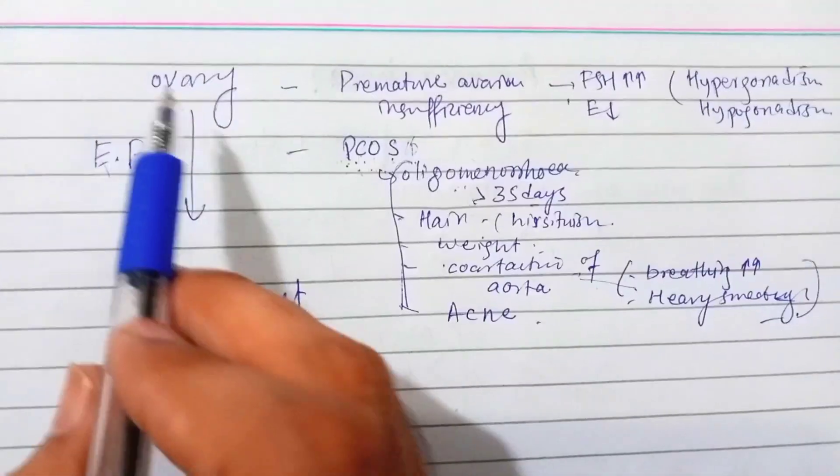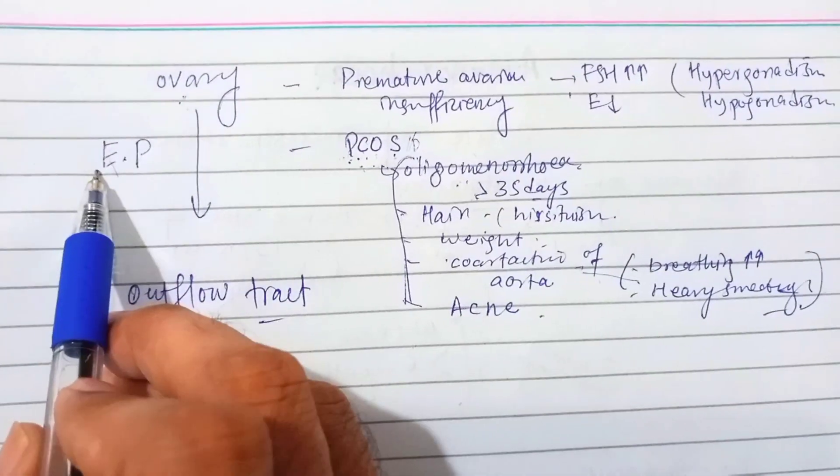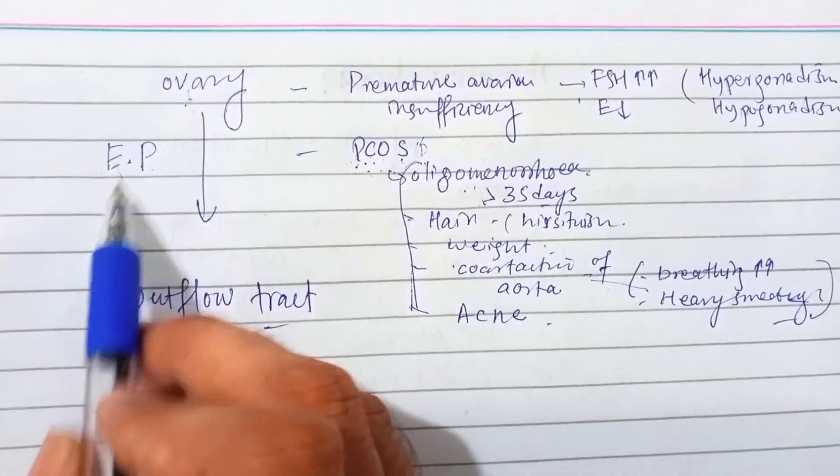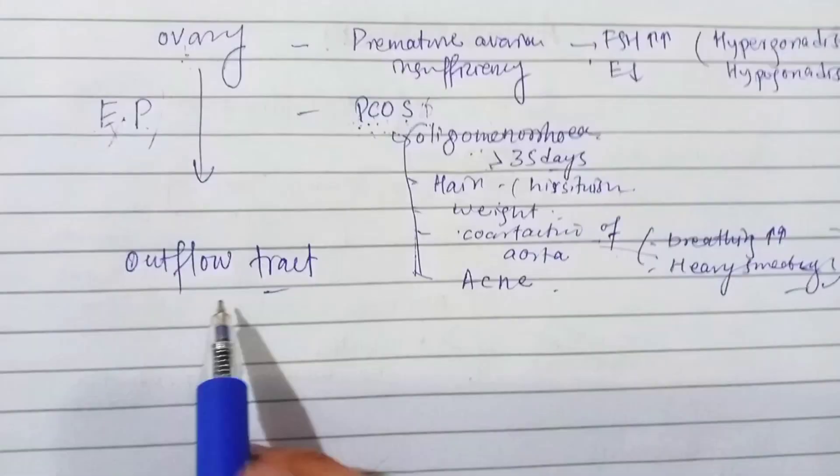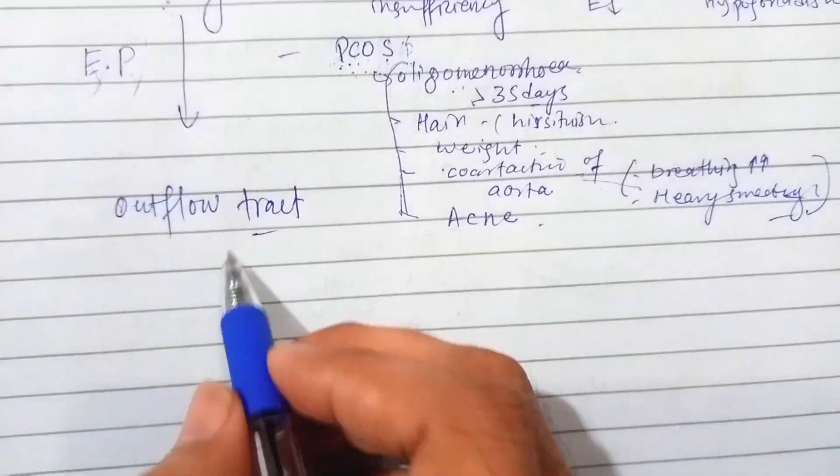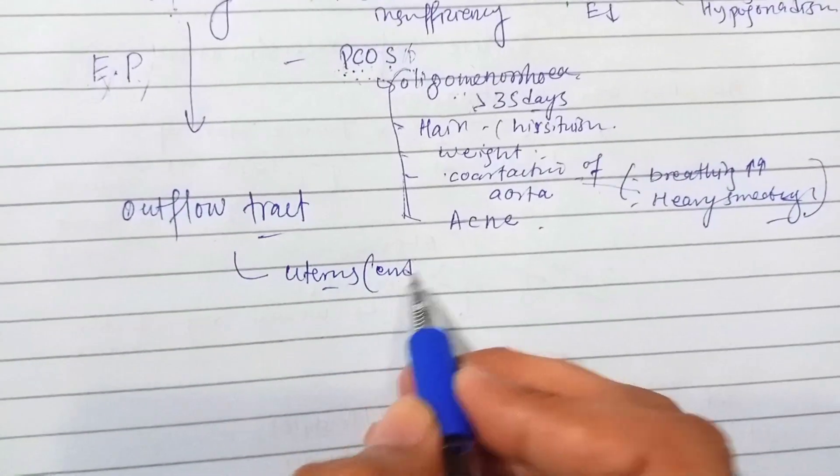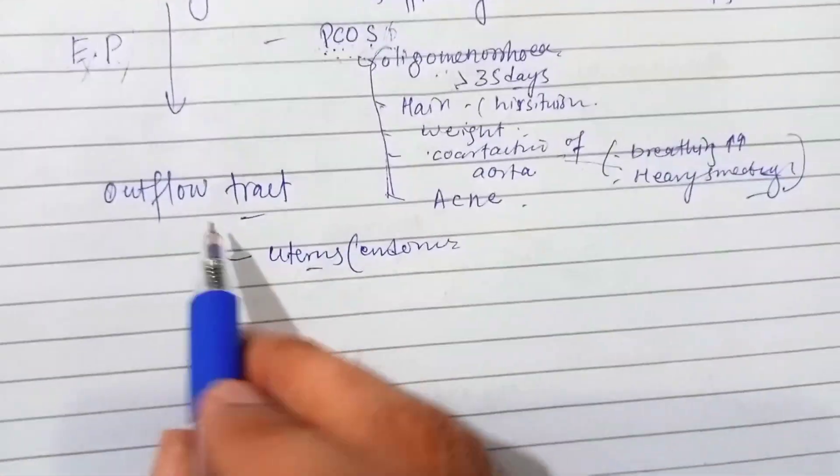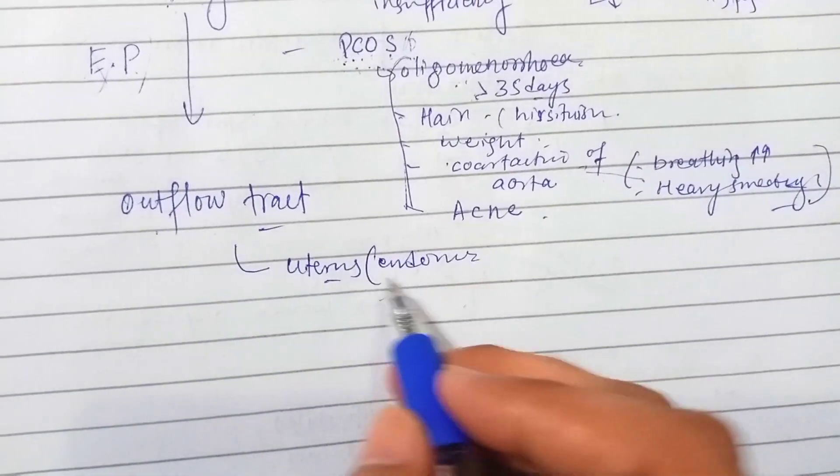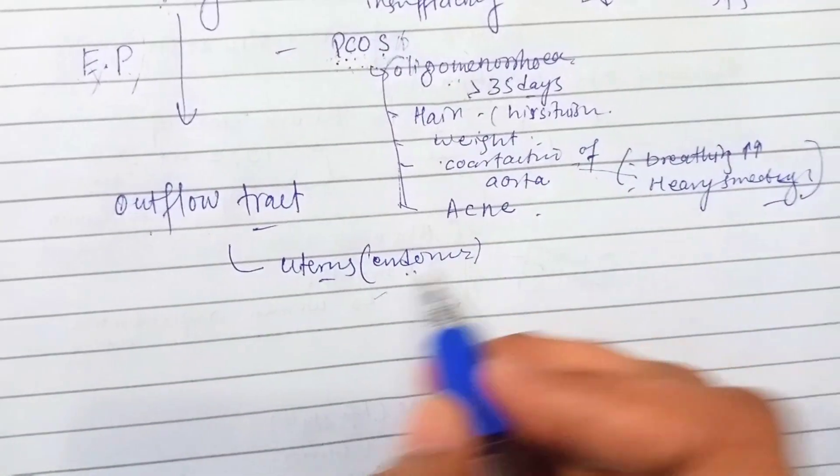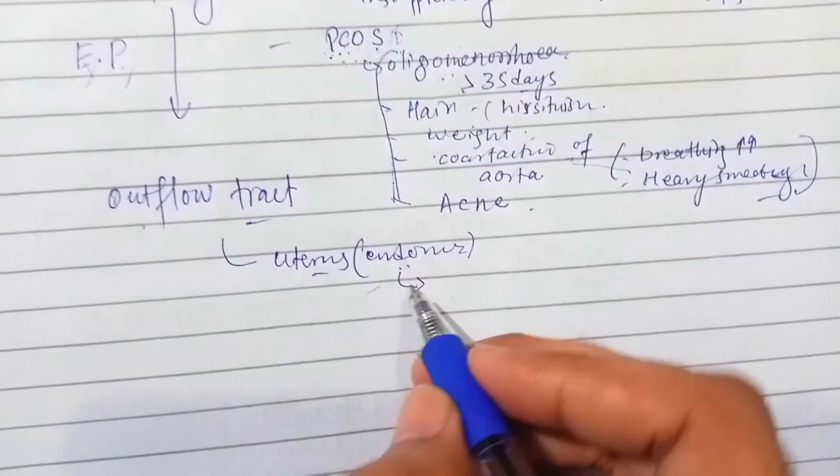All these points show that polycystic ovarian syndrome is present. If there is PCOS, it means there is a problem with the ovary. When there is a problem with the ovary, estrogen and progesterone are disturbed, and this affects the outflow tracts including uterus or endometrium. When there is outflow genital tract abnormality, it means there is abnormality in the endometrium, first of all uterus.